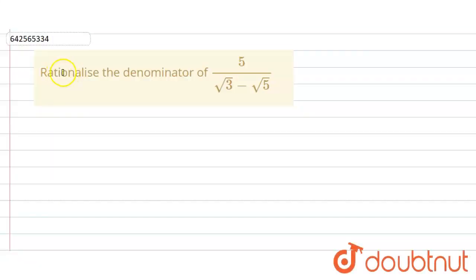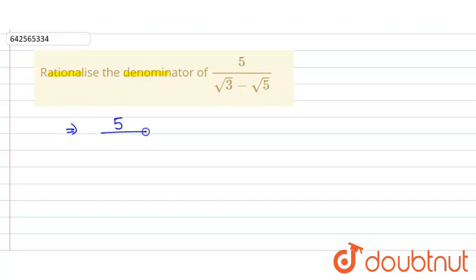In the given question we have to rationalize the denominator of 5 divided by root 3 minus root 5. So here that one is equal to 5 divided by root 3 minus root 5. We have to rationalize the denominator so that we get a rational number in the denominator.